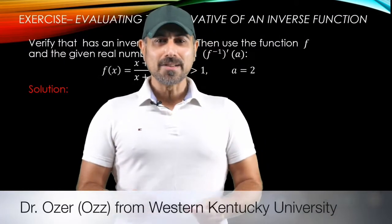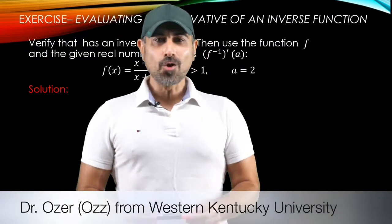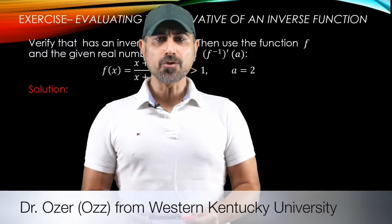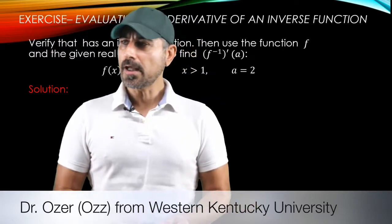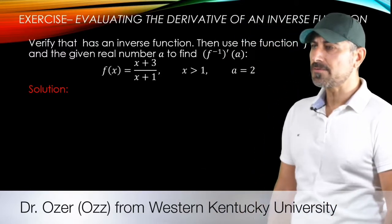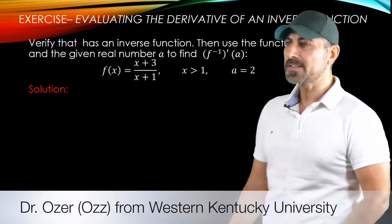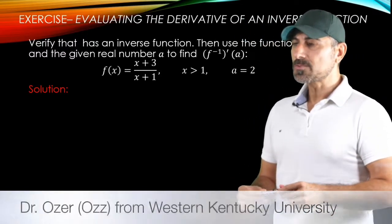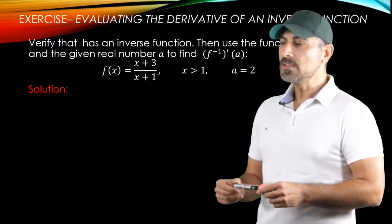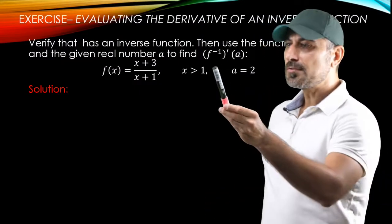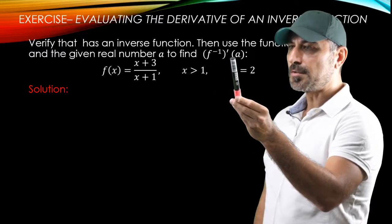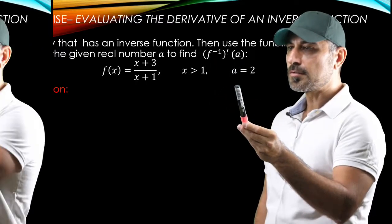Hello, welcome back. In this video we're going to go over an exercise where we evaluate the derivative of an inverse function at a given point. The function provided is the rational function (x+3)/(x+1), where x is greater than 1, and the derivative of the inverse function we're going to evaluate is at the point a equals 2.